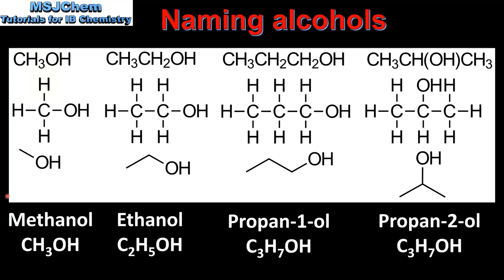The 'e' on the end of the alkane name is then changed to 'ol'. So the first alcohol in the homologous series is methanol. With two carbon atoms we have ethanol.